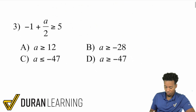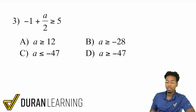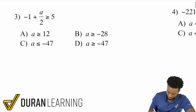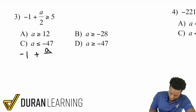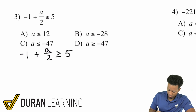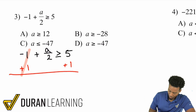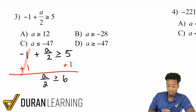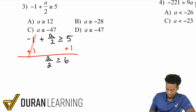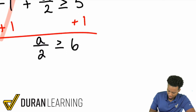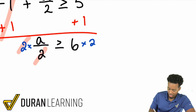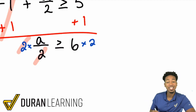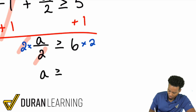Let's go down to number 3. We have negative 1 plus A over 2 is greater than or equal to 5. Same deal — we're going to treat this just like a two-step equation. The first thing I'll do is get rid of that negative 1 by adding 1 to both sides. That cancels out on the left, giving me A over 2 is greater than or equal to 6. My next step is to get rid of that 2 by multiplying both sides by 2. Dividing and multiplying by 2 are opposite operations, so that cancels out, giving me A is greater than or equal to 12.